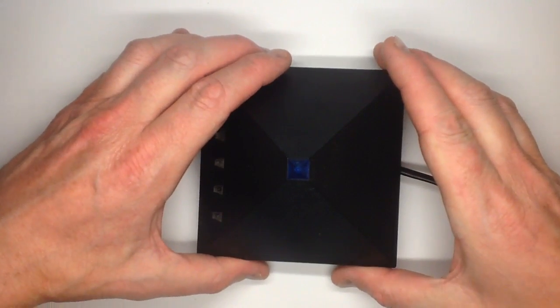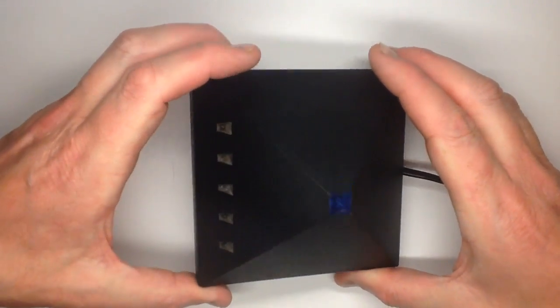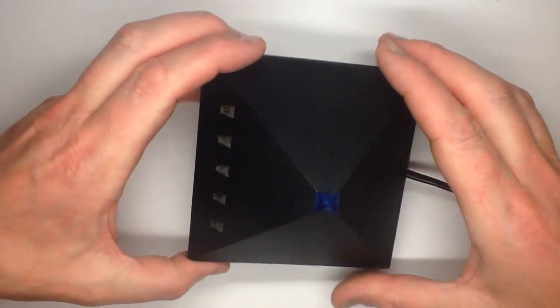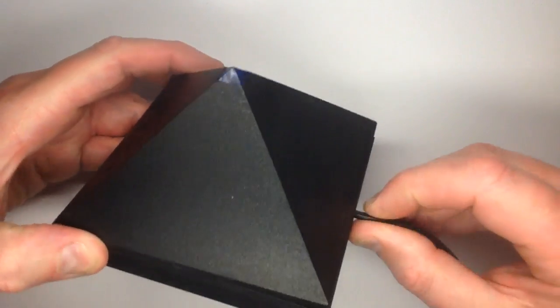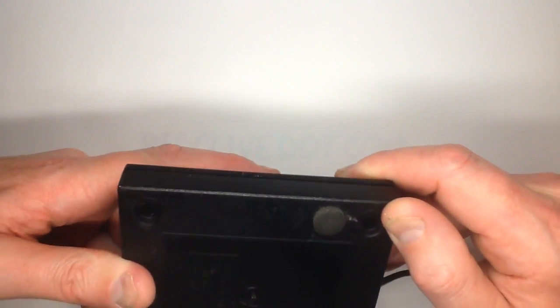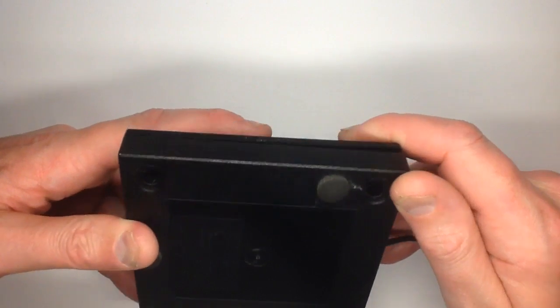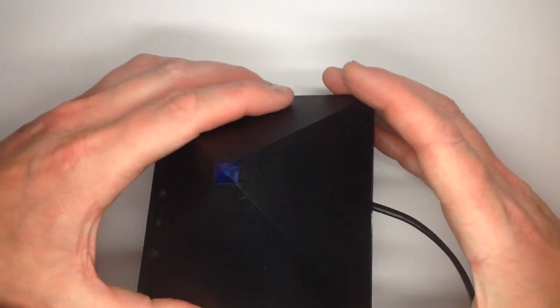This is a Dezac Pyramid Ionizer or negative ion generator and I've got the case partially open because it turns out that it's not held together with screws. I don't know if it's heat-staked or it's just clips but it's quite hard to get open so I had to pre-pop it apart.